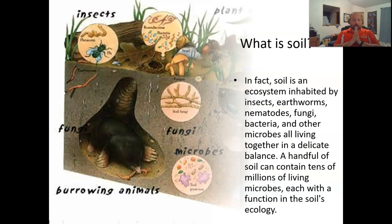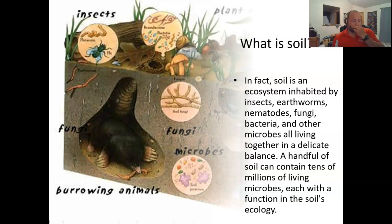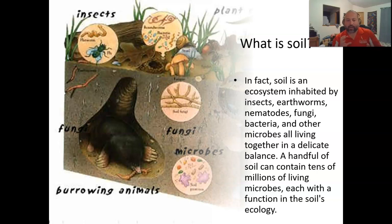Looking at soil as this living, dynamic body capable of supporting vegetative cover, it's an ecosystem with insects, earthworms, nematodes, fungi, bacteria, and other microbes living in a delicate balance. The roots need the soil for structure; the soil needs the roots for sugars and nutrients. The roots need the soil for water; the organisms need the soil for air and water. You've got the nitrogen cycle and the carbon cycle — all these things happening in symbiosis.